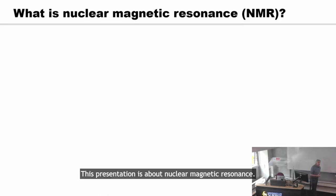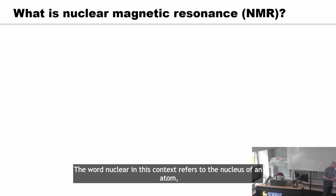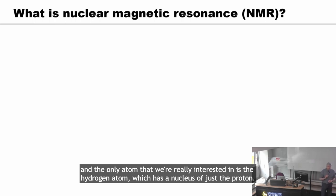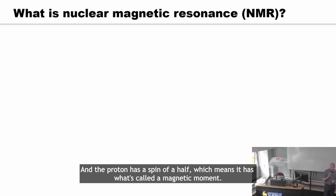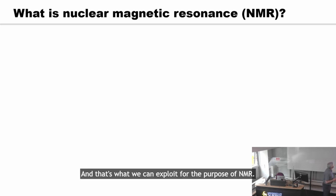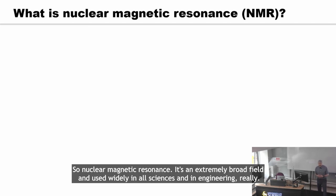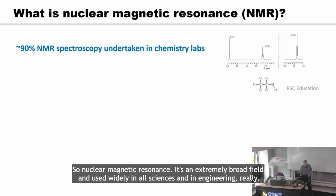This presentation is about nuclear magnetic resonance. The word nuclear in this context refers to the nucleus of an atom. The only atom we're really interested in is the hydrogen atom, which has a nucleus of just a proton. The proton has a spin of one-half, which means it has what's called a magnetic moment, and that's what we exploit for the purpose of NMR. The resonance refers to signals from experiments in NMR.